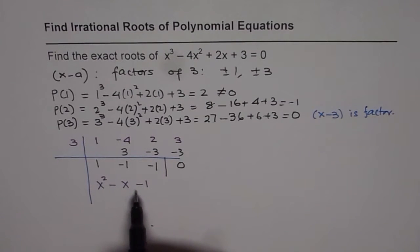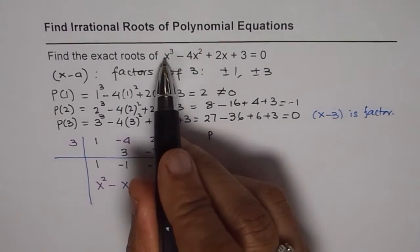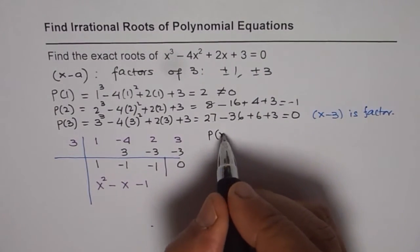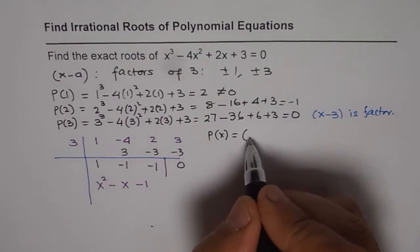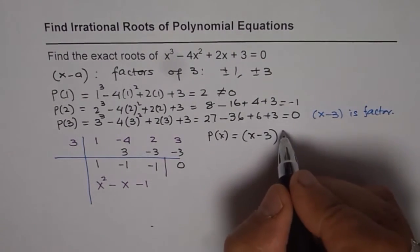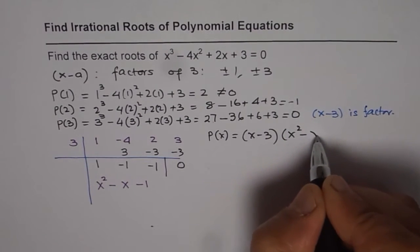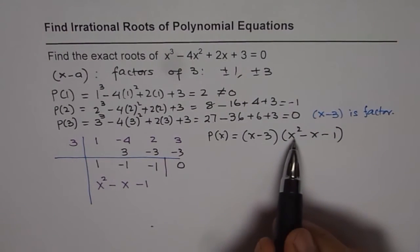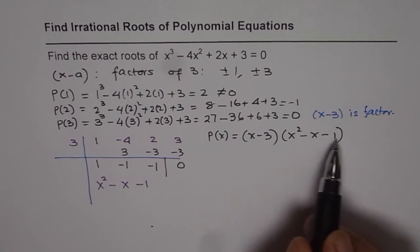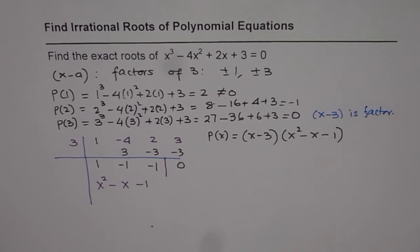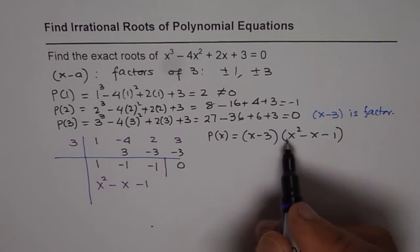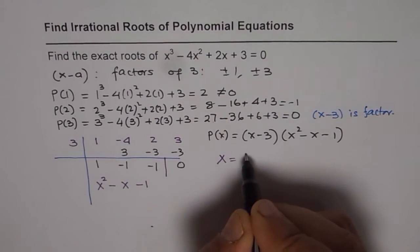This is a quadratic equation. At this stage, we can write our polynomial as P(x) = (x - 3)(x² - x - 1). Now we need to find the roots of this quadratic factor. Since it cannot be easily factored using product-sum and the methods we know, we will use the quadratic formula.